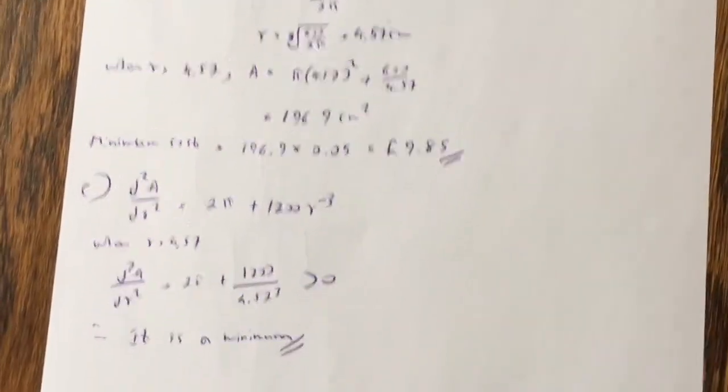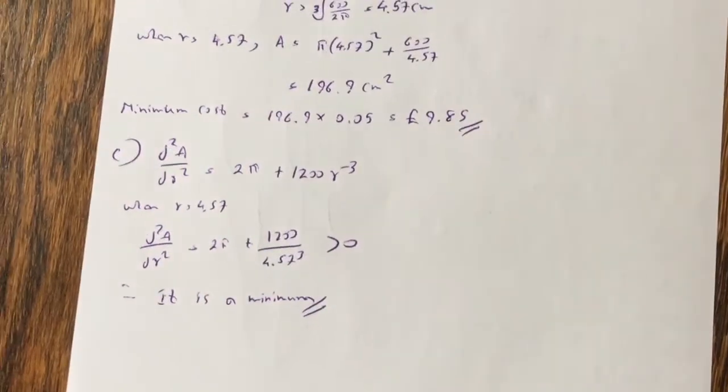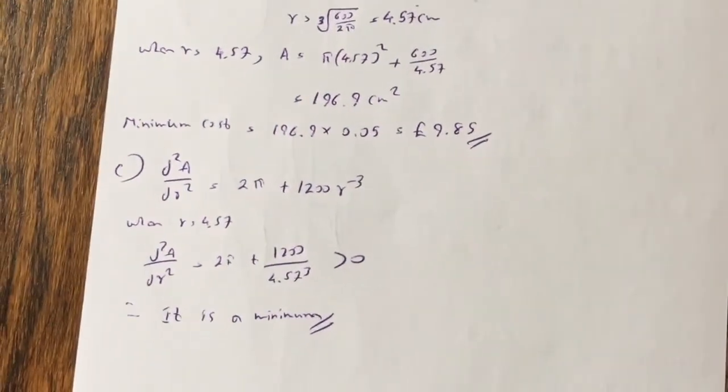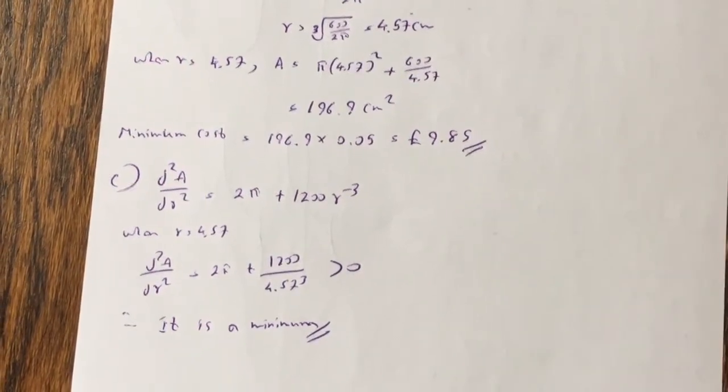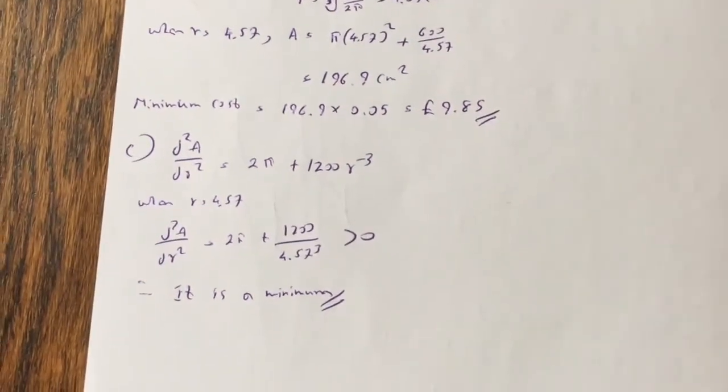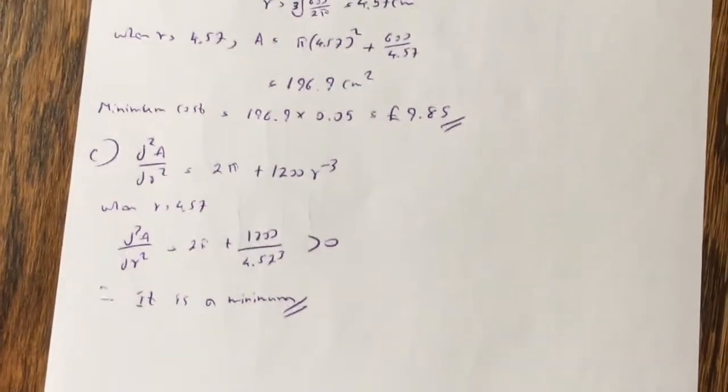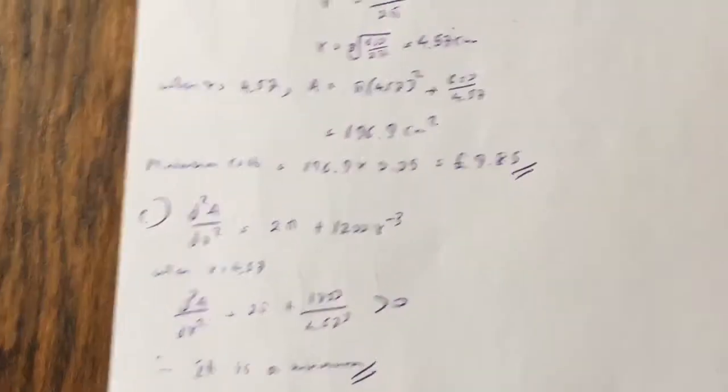Justify this is a minimum, so second derivative is 2 pi plus 1,200 r to the minus 3, so when r equals 4.57, second derivative is quite clearly is greater than 0, so therefore it is a minimum. So that's question 4.